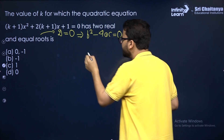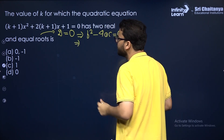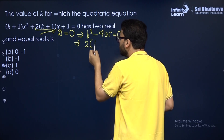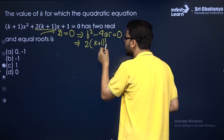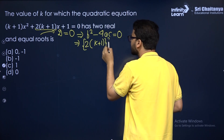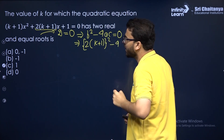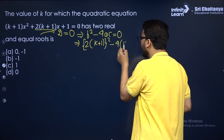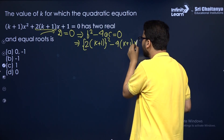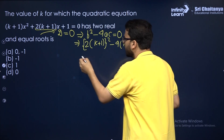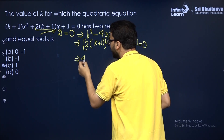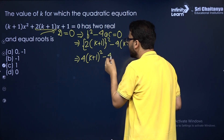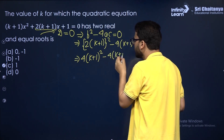The discriminant for a quadratic equation is B² − 4AC = 0. Now B here is the coefficient of X, so it is 2(K + 1). Therefore: [2(K + 1)]² − 4 · (K + 1) · 1 = 0. This simplifies to 4(K + 1)² − 4(K + 1) = 0.